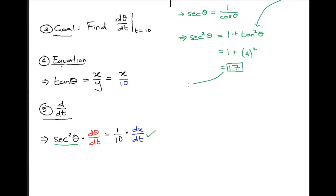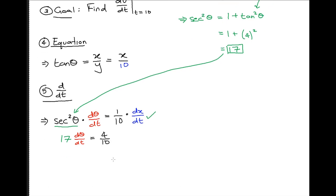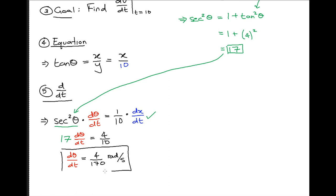Now let's plug in 17 for secant squared theta and wrap up the problem. We have 17 times dθ/dt equals 4 over 10. Dividing both sides by 17 gives us dθ/dt equals 4 over 170 radians per second. The units are radians per second because that's the standard unit for angular velocity.